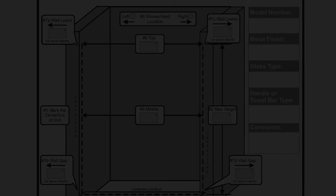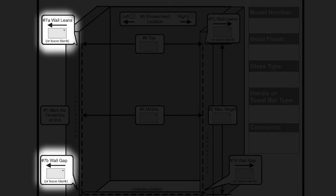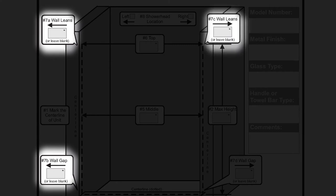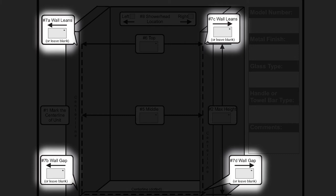For the left wall, record the gap measurement in either the top box 7A or the bottom box 7B. For the right wall, record the gap in top box 7C or bottom box 7D.